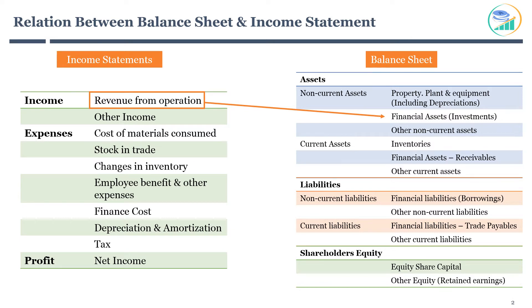On the other side, the sale done on credit generates accounts receivable on the balance sheet. Accounts receivable are classified as current assets.